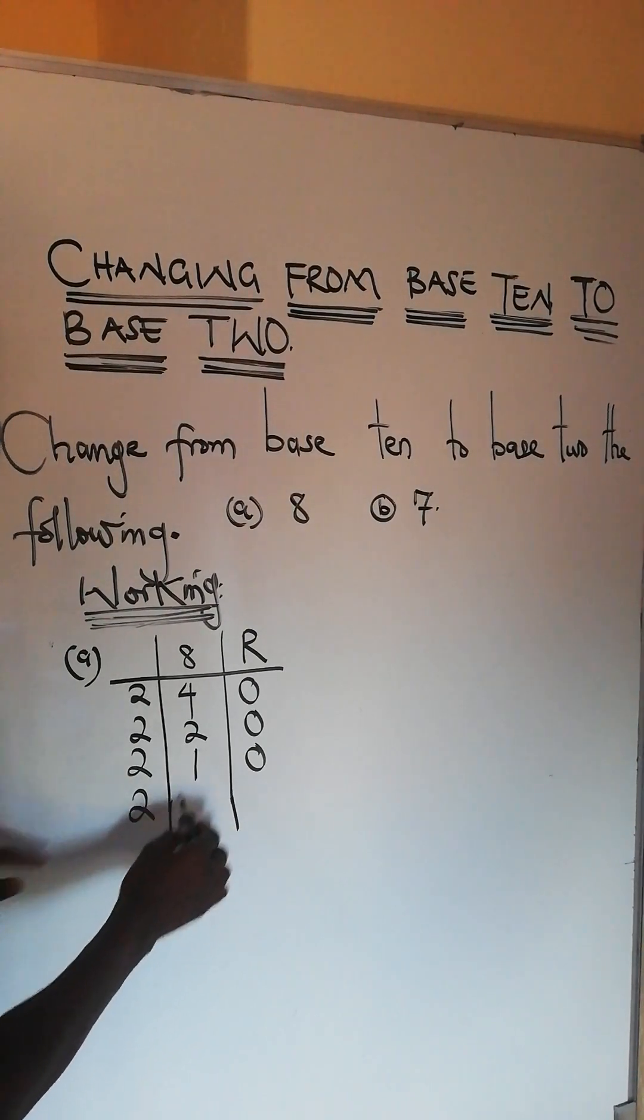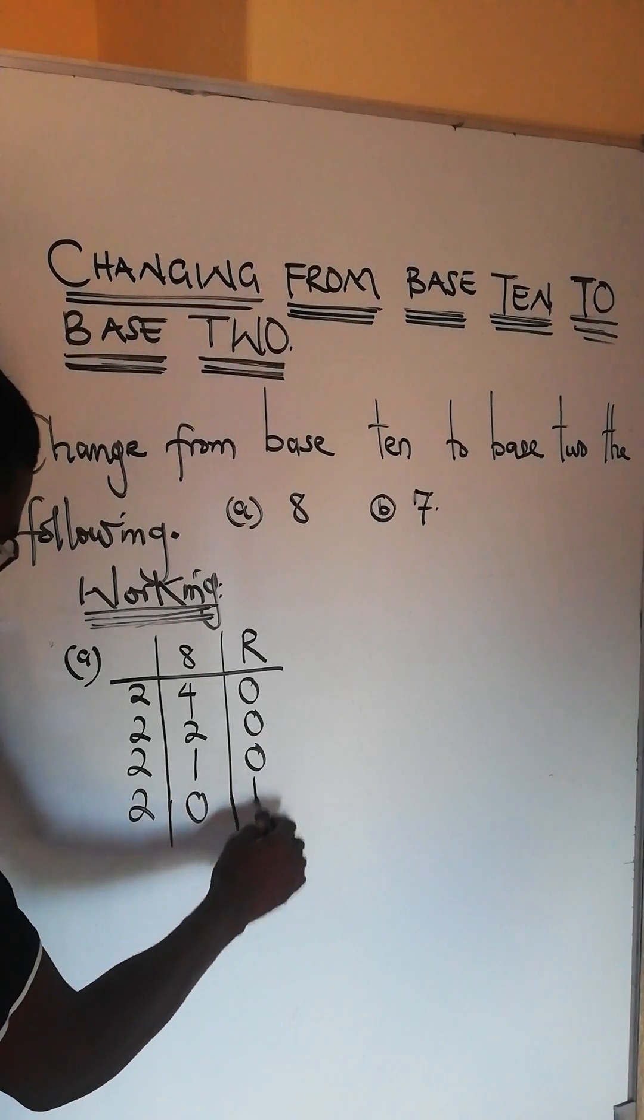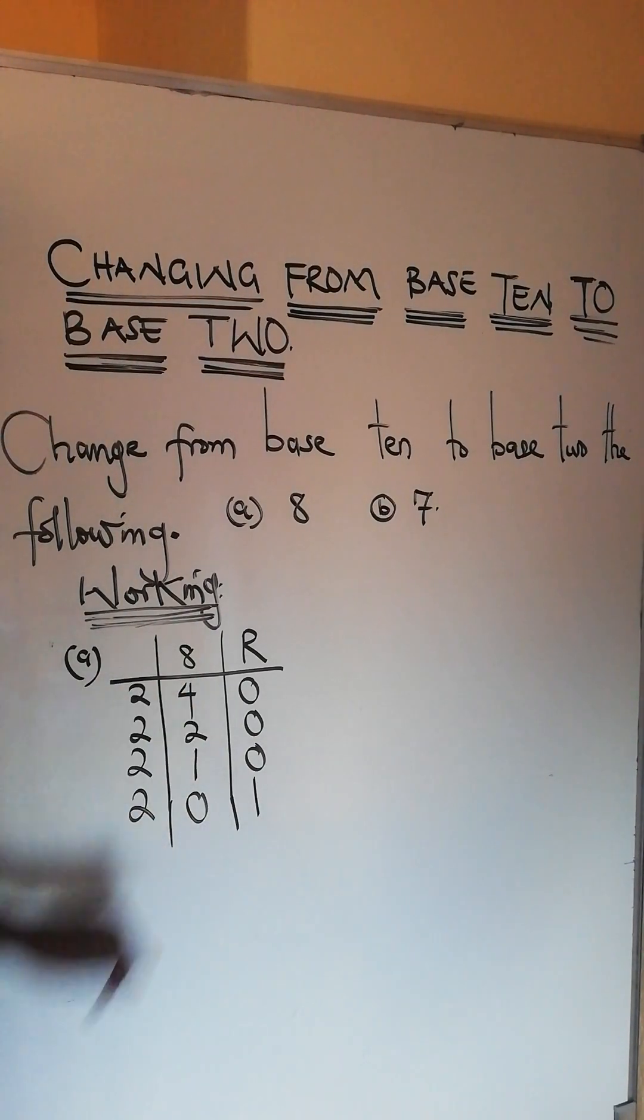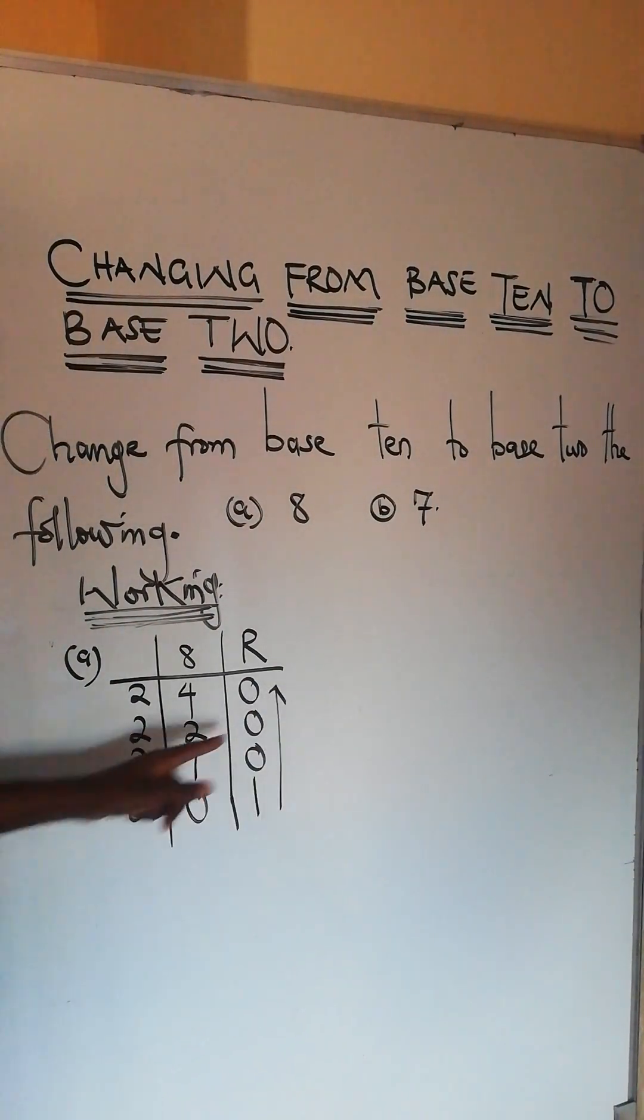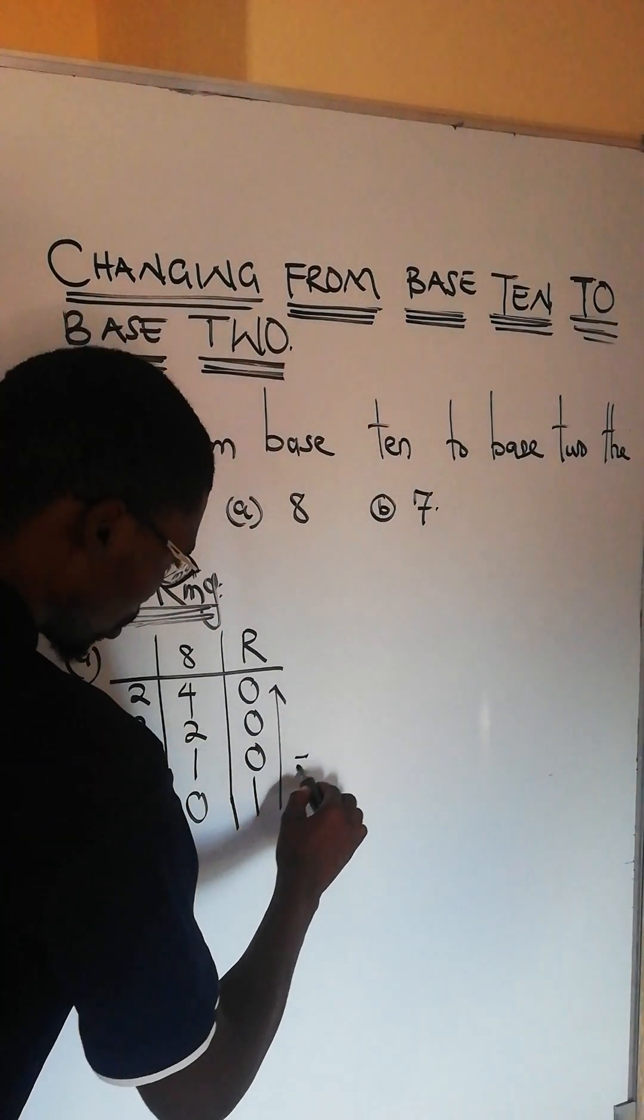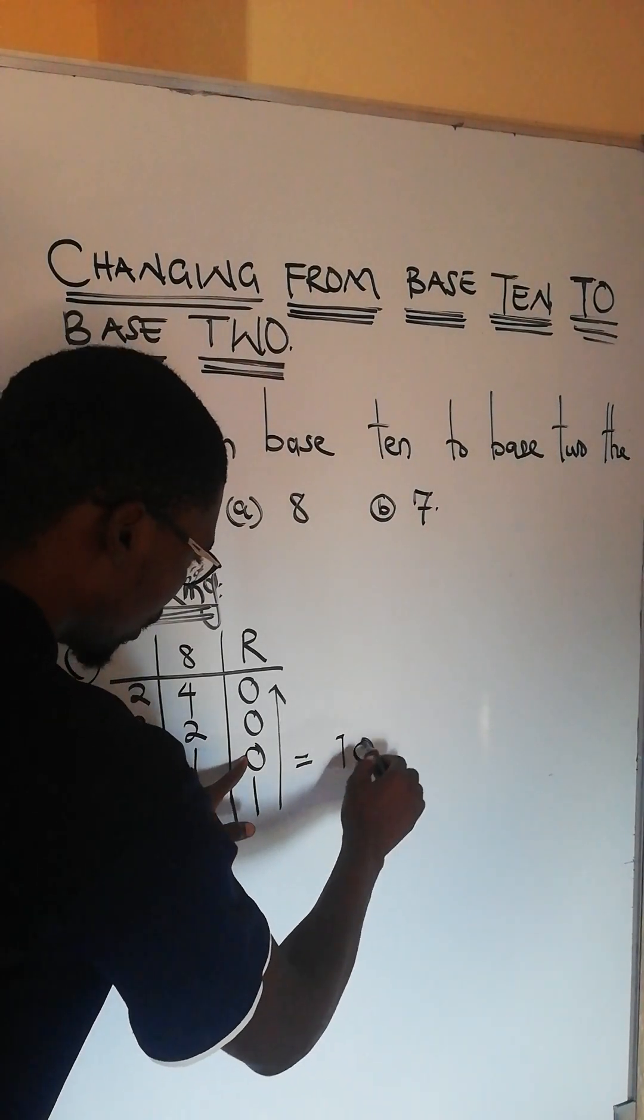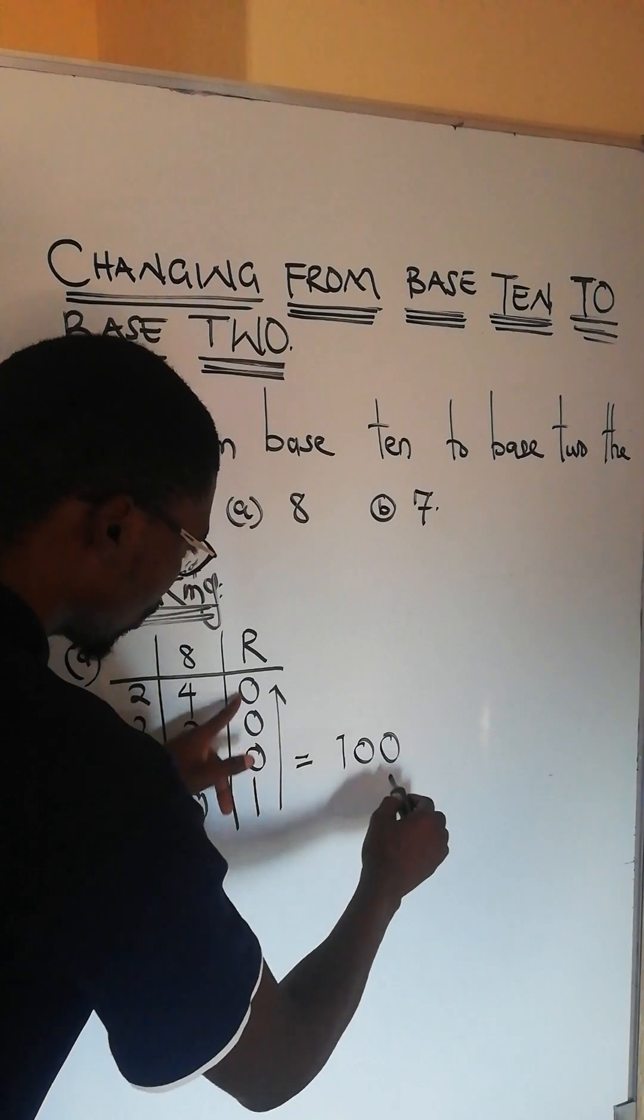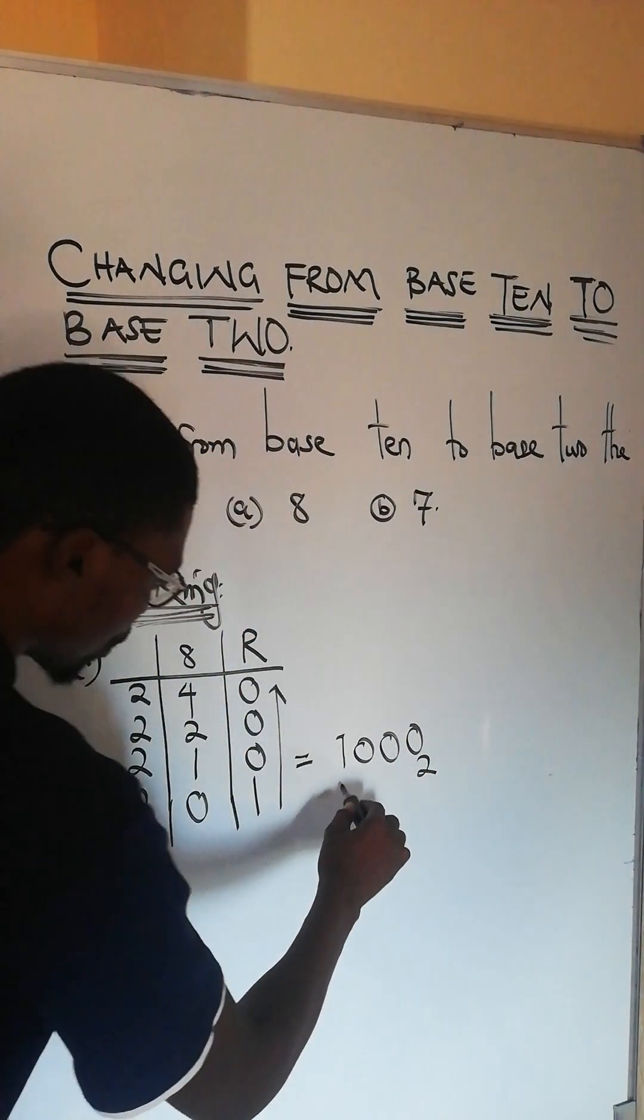You divide this 2 by 2 you get 1 and the remainder is 0. You divide this 1 by 2 you get 0, the remainder is 1. Then when you do this, you collect all your remainders starting from the bottom up. What you're going to get is 1, 0, 0, and another 0, and this is in base 2.